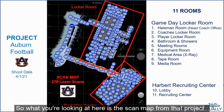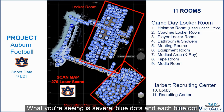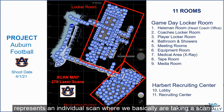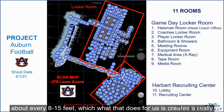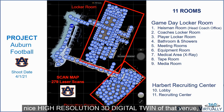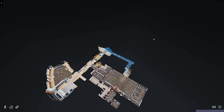What you're looking at here is the scan map from that project. The blue dots each represent an individual scan, taken approximately every 8 to 15 feet, which creates a really nice high-resolution 3D digital twin of that venue, which looks like this.